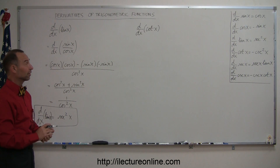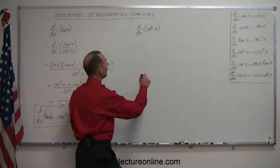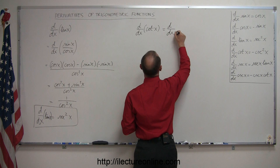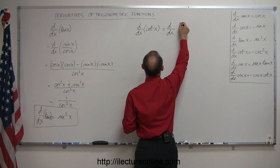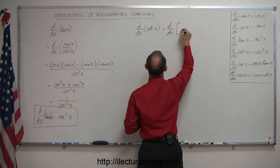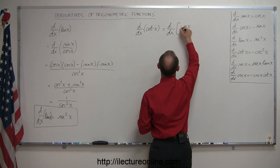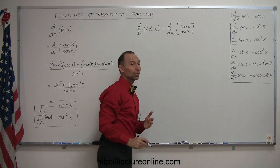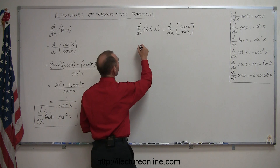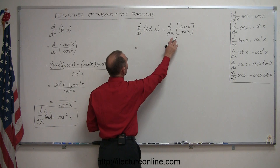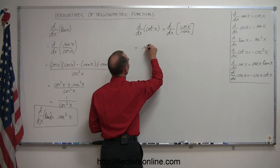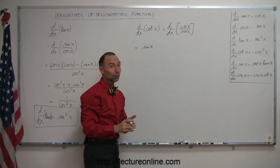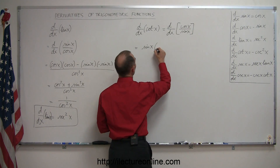The cotangent of x will be very similar. So this can be written as d/dx of cosine over sine, that is cosine of x over sine of x. Again we use the quotient rule, so this is equal to the denominator, sine of x, times the derivative of the numerator. The derivative of cosine of x is minus sine of x.